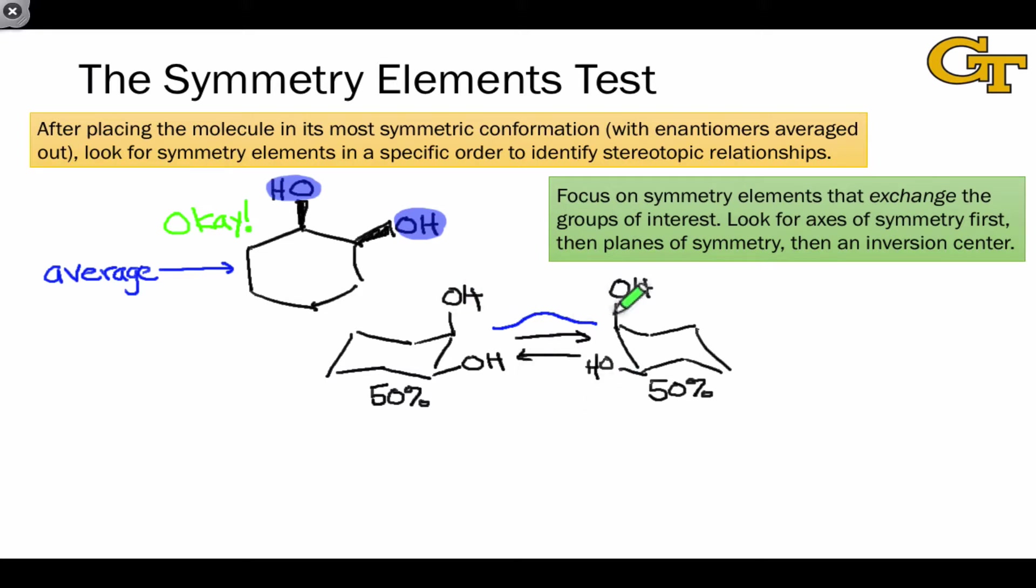What incoming groups see is the average of the two chair conformations. And so when considering stereotopic relationships, we can average out enantiomeric conformations, meaning we don't really have to worry about conformation in detail. We can use simpler drawings like this to deduce stereotopic relationships.